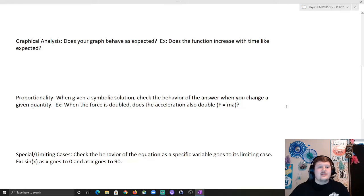Graphical analysis. Does your graph behave as expected? Does the function increase with time like expected? This one isn't used very often. It's typically used when given a graph, so maybe I gave you a graph that looked like a parabola of some sort. I give you this parabola, and then you see that your equation is f equals ma. Well, I see here that this is a parabola, so I would expect some sort of x squared component, and I don't have one here, so I would either say my graph isn't right or my equation isn't right, and because there's an issue there, you can go back and look at your problems.